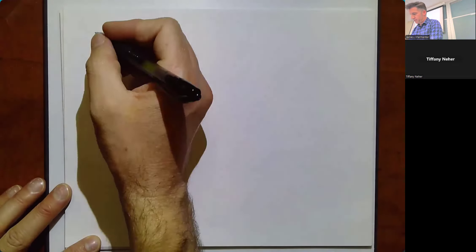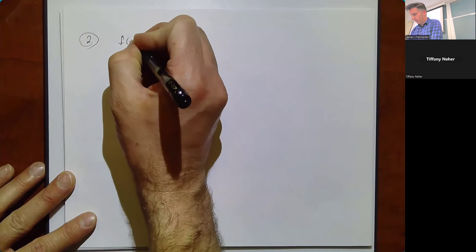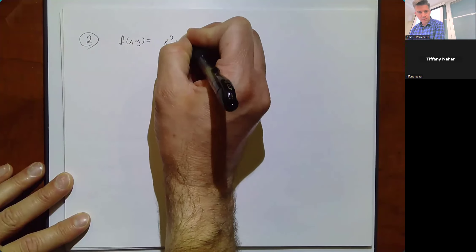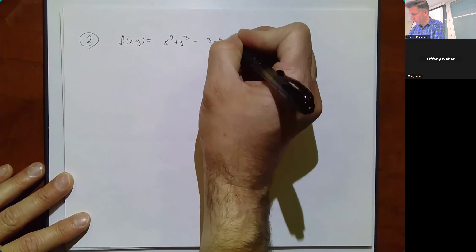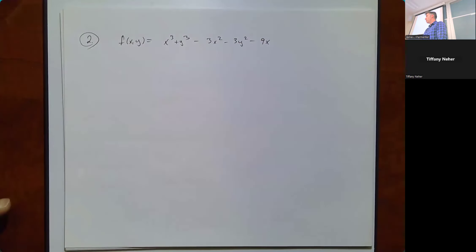Let's look at another example. Let's say f(x, y) = x³ + y³ - 3x² - 3y² - 9x. That looks kind of gnarly. Find the partial derivatives with respect to x and with respect to y.